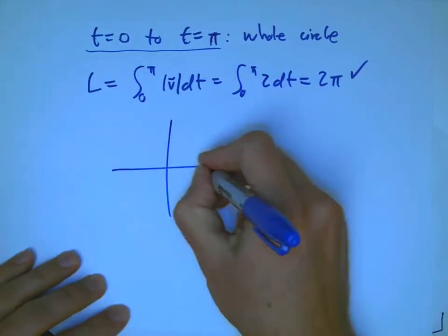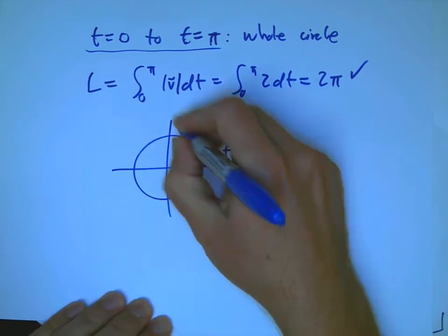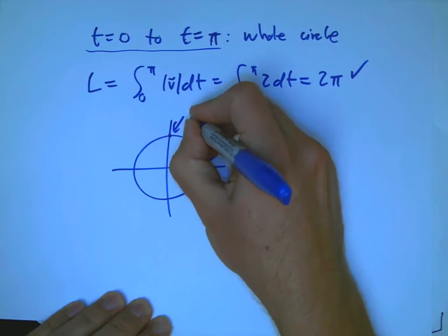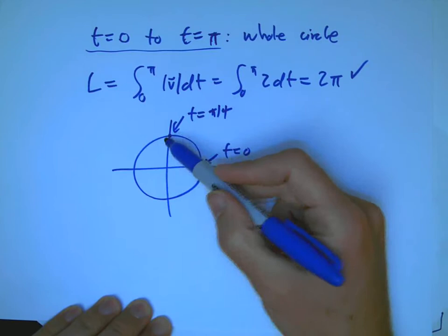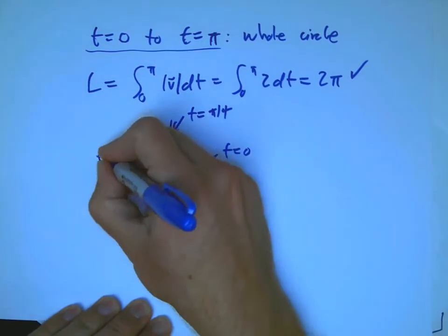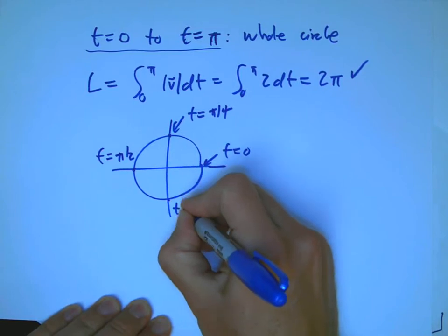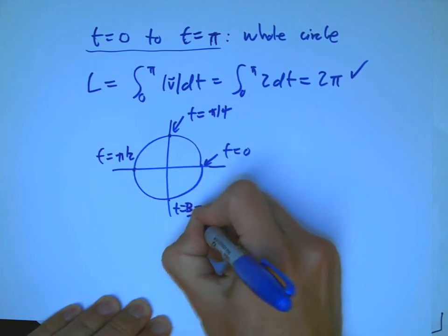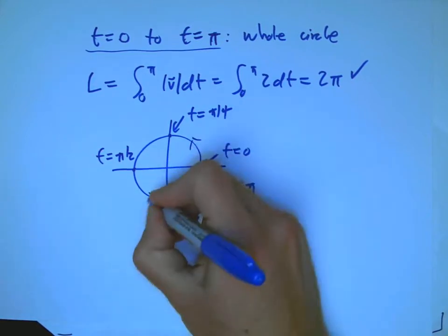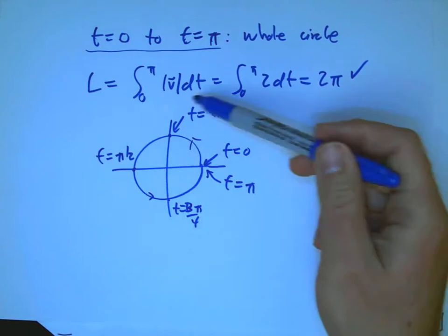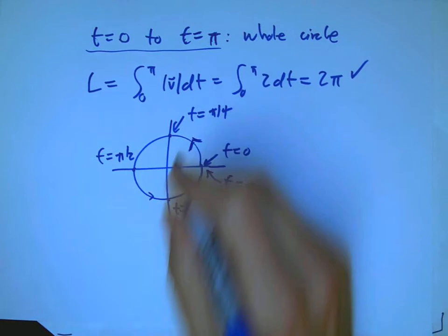So, here's something where it's not parametrized by arc length. And so, the labels, the t labels on this circle are rather misleading if you think that they're geometric. Here's t equals 0. Here's t equals pi over 4. Because when t equals pi over 4, the cosine 2t and sine 2t are already all the way up here. Here's t equals pi over 2. Here's t equals 3 pi over 4. And you only need 0 to pi to get all the way around the circle.